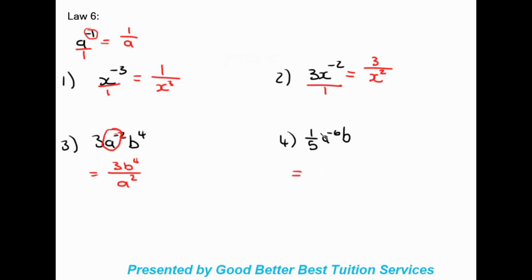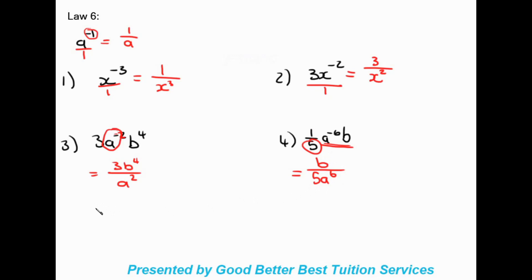For one over five a to the negative six, b: the one is already on top and five is on the bottom. The a is affected by the negative exponent so it moves to the bottom, while b stays on top. Since one times b is just b, the final answer is b over five a to the power of six.